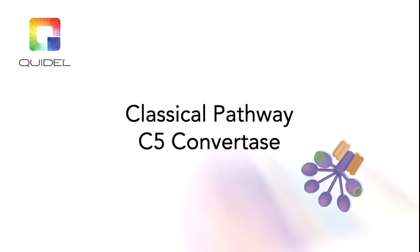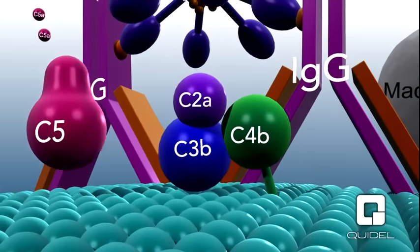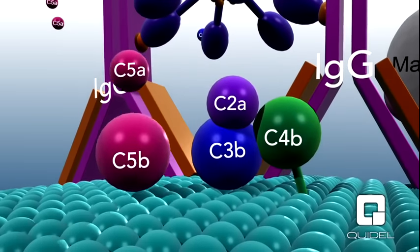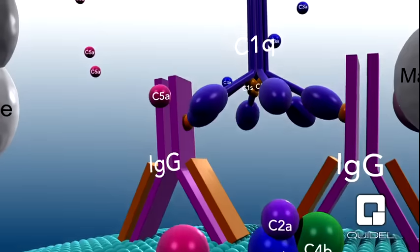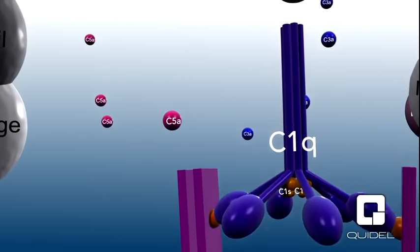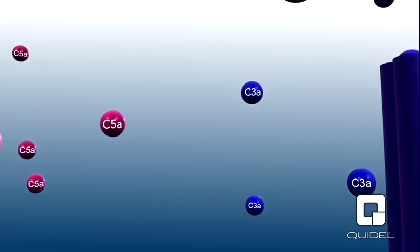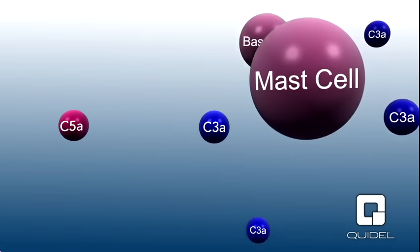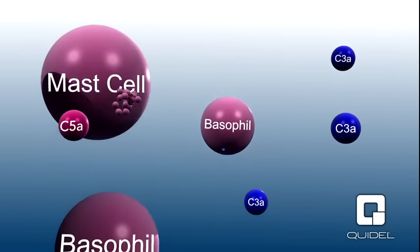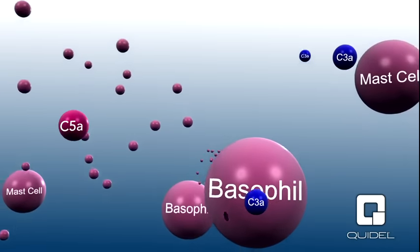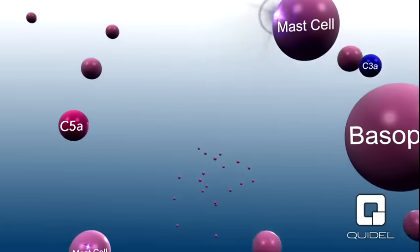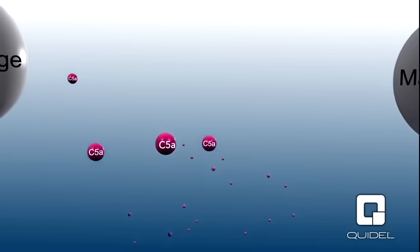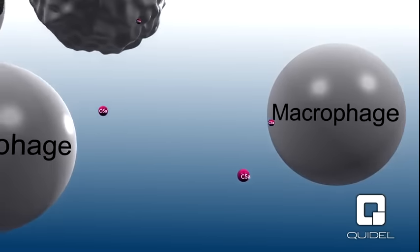The C5 molecule is cleaved by the C5 convertase into C5a and C5b, both of which mediate important host defense functions of the complement system. Both C3a and C5a are potent chemoattractants. C3a attracts mast cells to sites of complement activation, and binding of C3a and C5a to mast cells, as well as basophils, induces degranulation and release of histamine and other vasoactive amines. C5a is a chemoattractant for macrophages and neutrophils, and binding of C5a to these cells primes them for mediating their host defense functions.